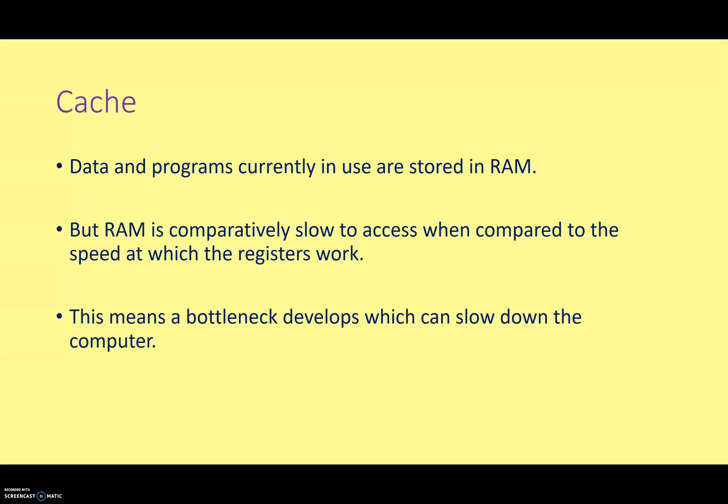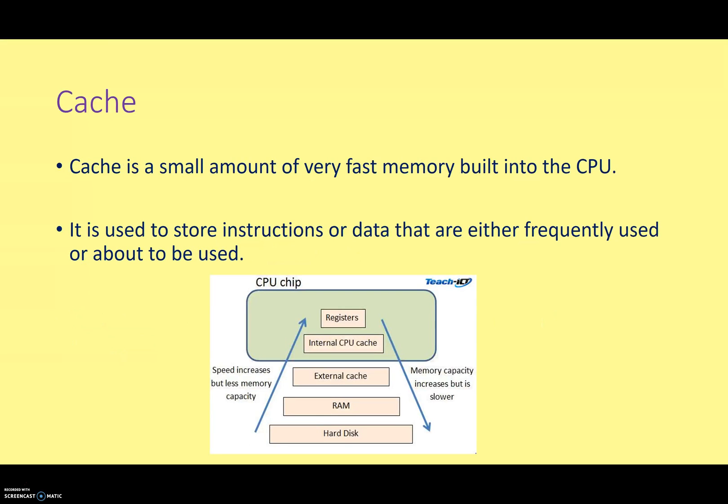Now, computer engineers are very smart people, and they found a way to deal with that. And since the title of this slide is Cache Memory, then cache memory is going to be the answer to this problem. Cache memory is a small amount of very fast memory that's built into the CPU. So you can think about it kind of as a kind of mid-stage between the RAM and the registers. It's not as big as RAM. In fact, it's measured in megabytes, not gigabytes.